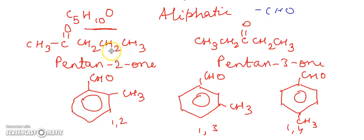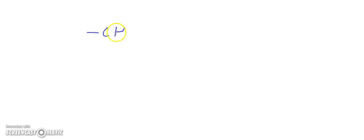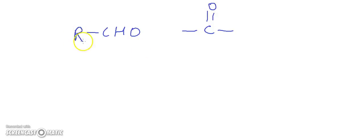Now we will learn about functional isomerism. In functional isomerism, aliphatic aldehydes and ketones are functional isomers of each other because they have the same molecular formula but differ in the functional groups. In the aldehyde we have the -CHO functional group (RCHO), and in the ketone we have the carbonyl group R-CO-R'.